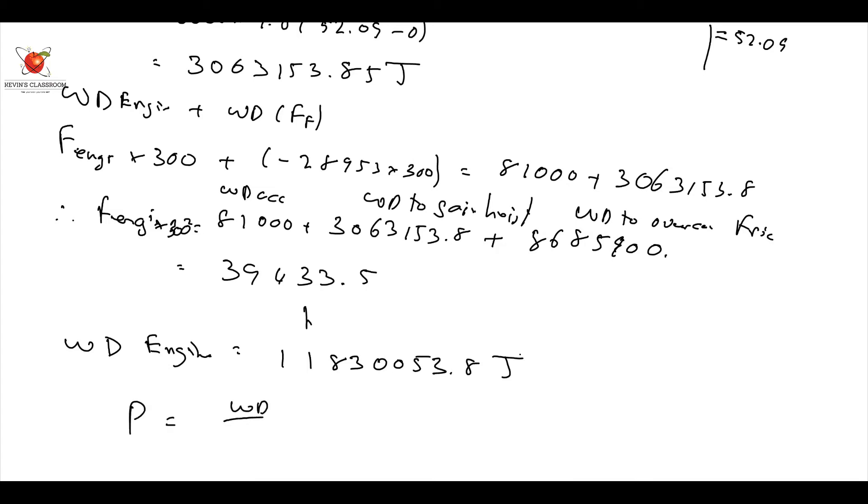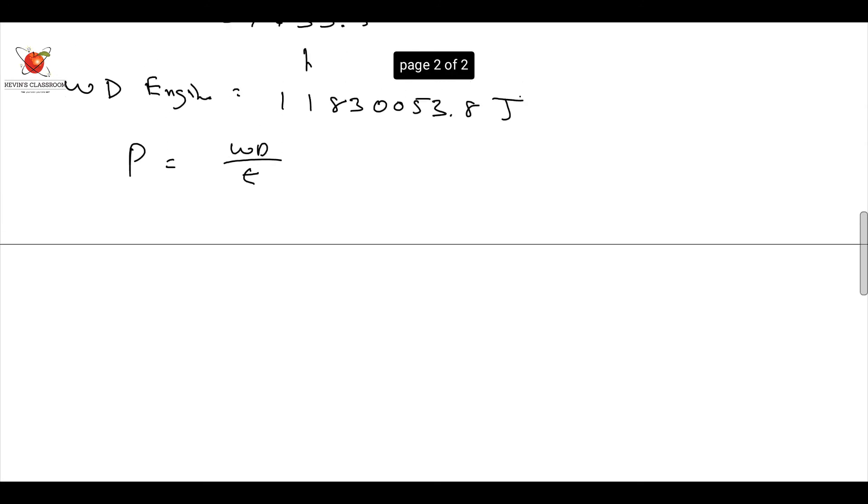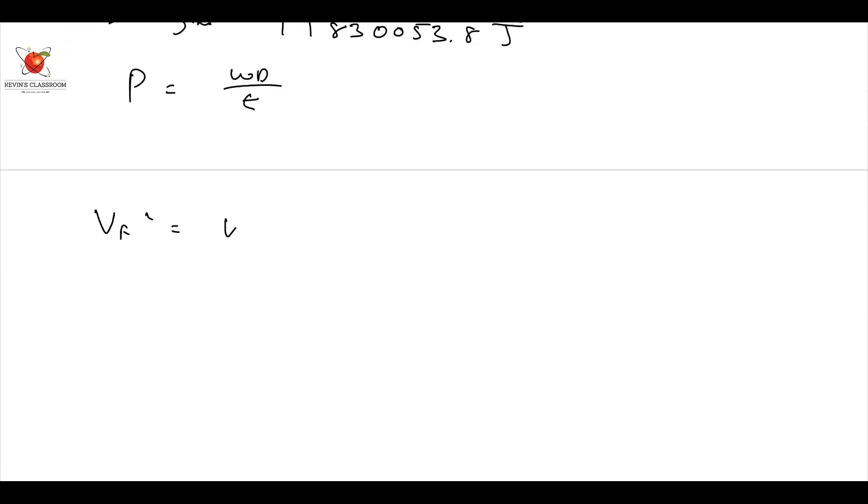And power is equal to work done over time. I need time, guys. How do I find? I've got to go to Newton's laws of motion to find time, don't I? So how do I do that? I now have to say I need acceleration. Acceleration I can get from here. I can say V final squared is V initial squared plus 2A times delta X. Therefore, 6 squared is going to be equal to 3 squared plus 2A times 300. Therefore, my acceleration is going to be 0.045 meters per second squared, and I can say at this point, I could say F net, if I wanted to. F net is going to be 6,000 times A, which is 0.045, which is equal to 270 newtons.